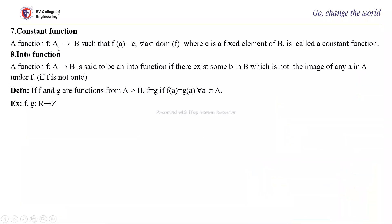Next is the constant function. A function f from A to B such that f(a) = c for all a in the domain, where c is a fixed element of B, is called a constant function — every element has the same image. An into function is a function f from A to B where there exists some b in B which is not the image of any element in A under f — that is, if f is not onto, it is called an into function, and some element of B is not associated with any element of the domain. Two functions f and g from A to B are equal if f(a) = g(a) for all a, meaning their images are the same.